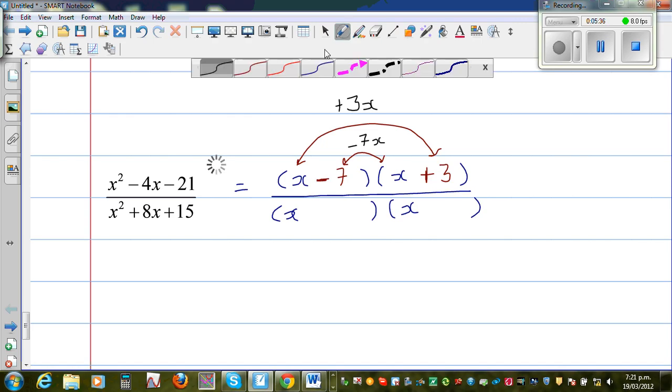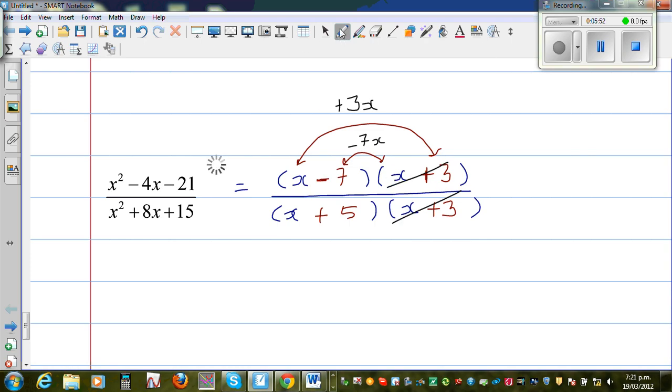And as it is plus, it's easier. So let me use a brown color. So it's plus 5, plus 3. Just like that. So this is 5x and 3x gives you 8x. So we can cancel this x plus 3 and x plus 3. So your final answer is equal to x minus 7 over x plus 5. Just like that.